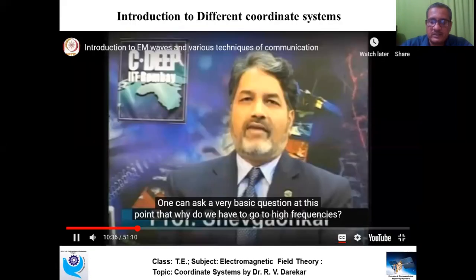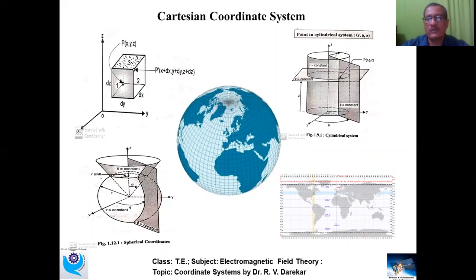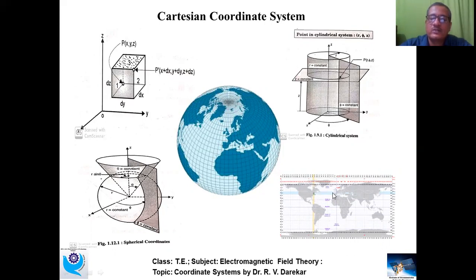Let us now start with the coordinate system. Till date we have known only one coordinate system — the Cartesian coordinate system — in which a point P can be located using the x-axis, y-axis, and z-axis. Along with Cartesian, there are other coordinate systems such as the cylindrical coordinate system, spherical coordinate system, and systems using longitude and latitude. Here we have to practice with Cartesian, cylindrical, and spherical coordinate systems.